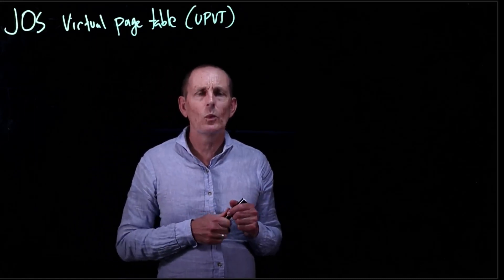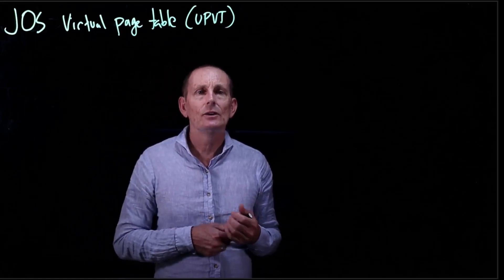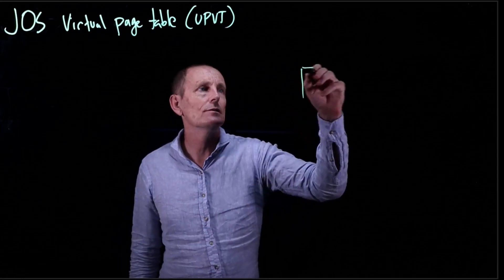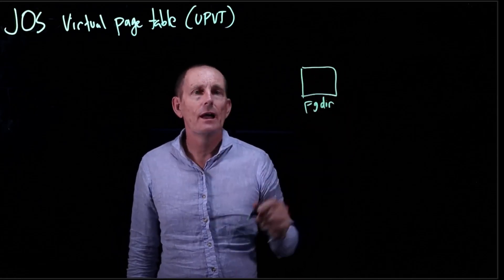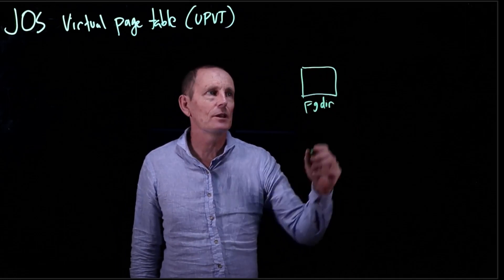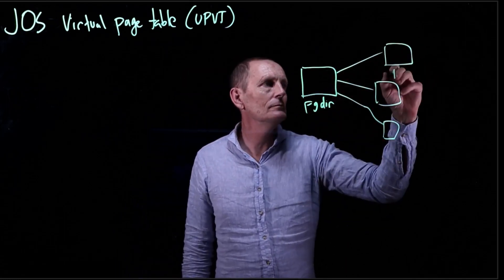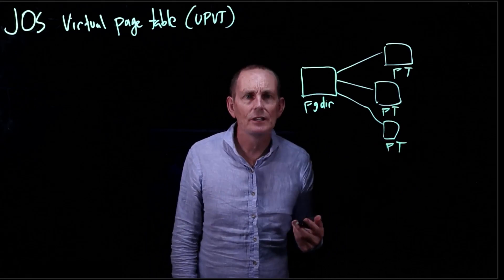When we're using JOS, we have a page directory which, of course, as we know, points to a bunch of page tables. However, these are all physical addresses that we have.